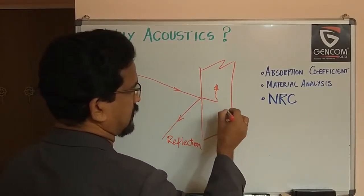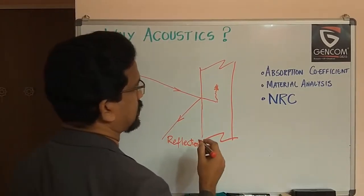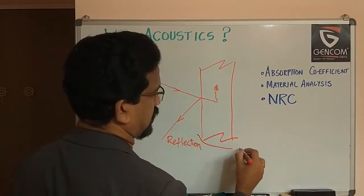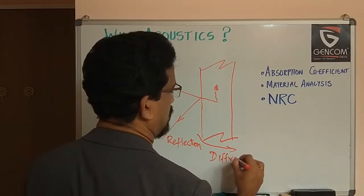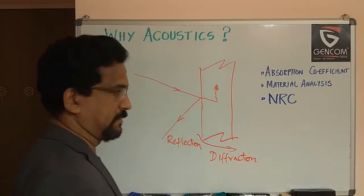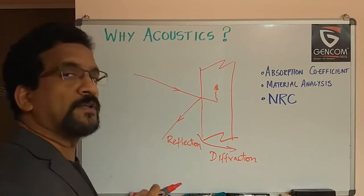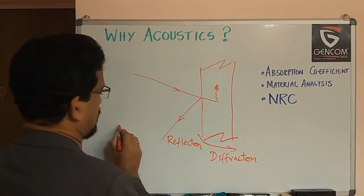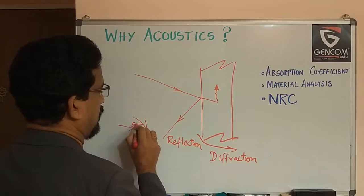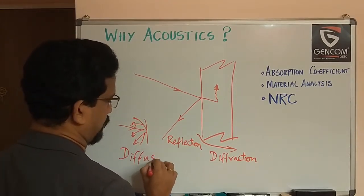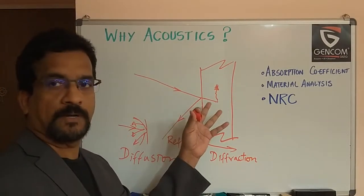When the sound goes inside the material, that is refraction — in optics we also talk about refraction. If the sound goes through the edge to another region, we talk about diffraction. Some concepts are similar in sound and in optics. There is also diffusion: when a sound wave hits a surface and gets distributed in all directions, we call that diffusion. So there are different things happening when sound hits an object.